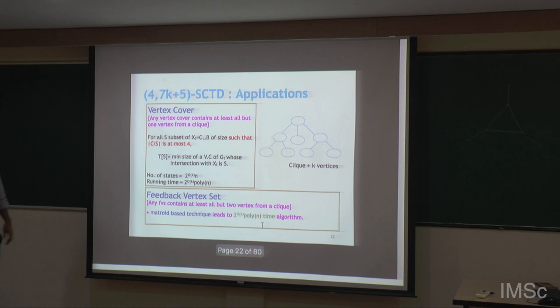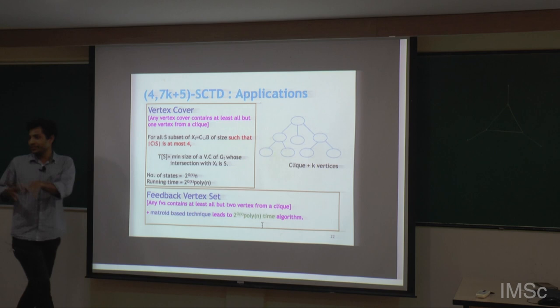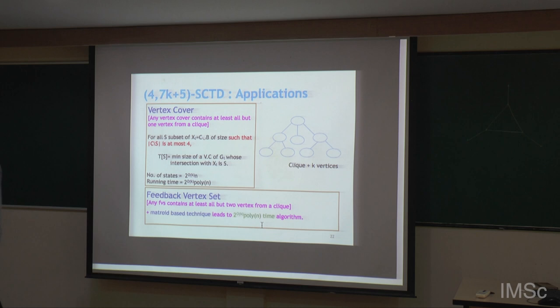For feedback vertex set also, from a clique I need at least all but 2. Using that, and sophisticated techniques rather than standard DP, we can get the same running time. So this is one way: find a tree decomposition with structure and exploit it to get good algorithms.